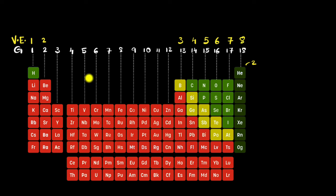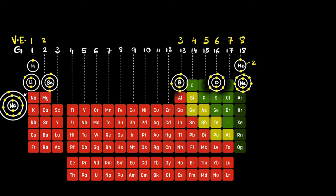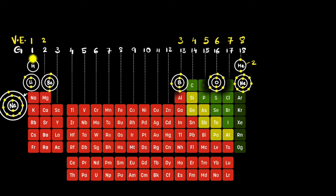Just to get a sneak peek of why this is the case, here are some structures of some of the elements. You can see hydrogen has one electron in its outermost shell. Lithium has one electron in its outermost shell. Sodium has a total of 11 electrons but one electron in its outermost shell. The same thing continues.